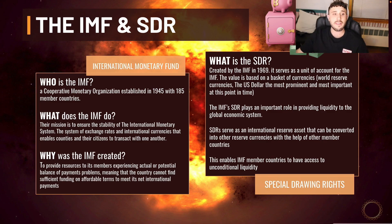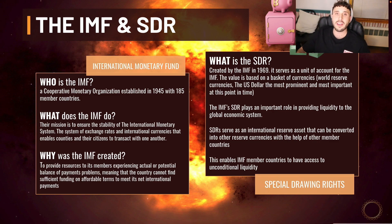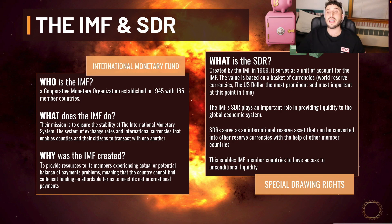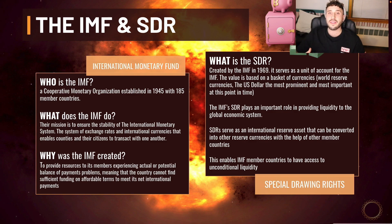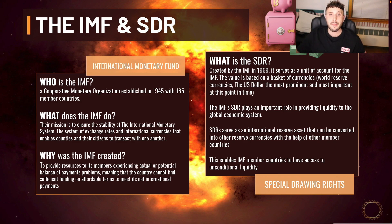We're on to the next biggest thing of our time. SDRs serve as an international reserve asset that can be converted into other reserve currencies with the help of other member countries, enabling IMF member countries access to unconditional liquidity. There's a crypto we talk about a lot that has a product called on-demand liquidity that they sell to banks — and now you have the IMF basically functioning as an unconditional liquidity provider through its member countries. The IMF member countries' access to unconditional liquidity through SDRs just gets the IMF's power bigger and bigger.